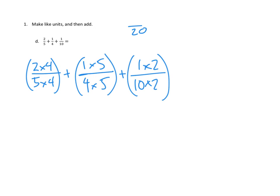And I think that our work is mostly done here. Two times four is eight-twentieths for our first fraction, plus one times five is five-twentieths for our second fraction, and one times two is two-twentieths for our third fraction. And can we add those up together now? Well, we have the same units. Eight plus five plus two is fifteen-twentieths.